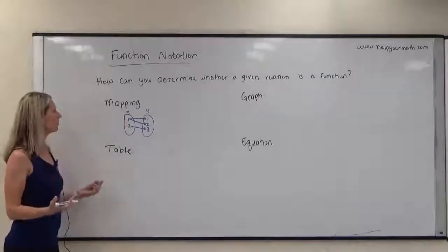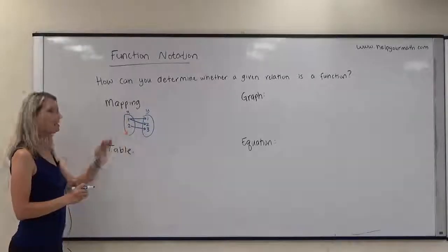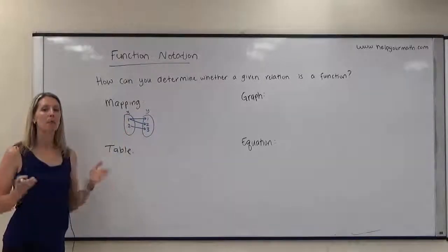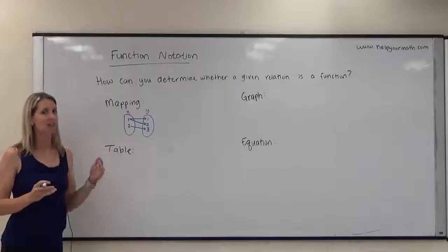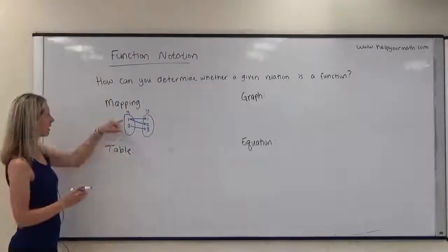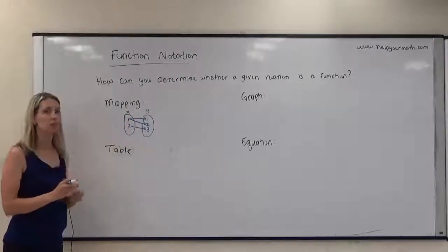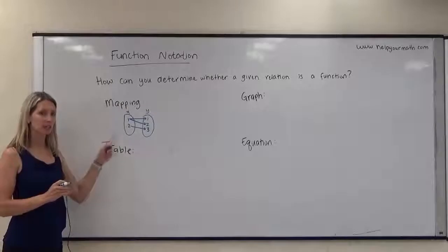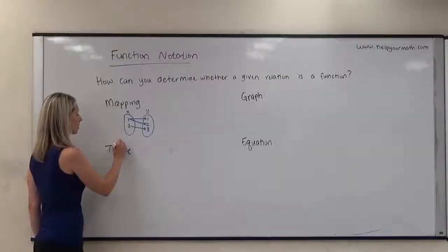What we're looking for with mappings is: does any input map to more than one output? If the answer is yes, then it's not a function. Because one maps to one and two, this particular example is not a function.